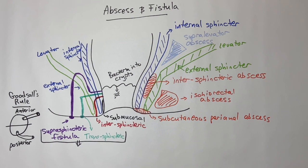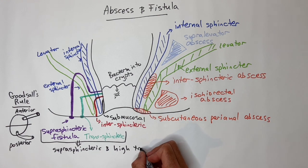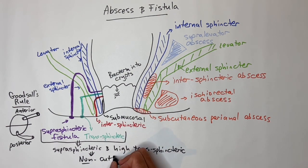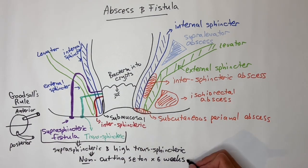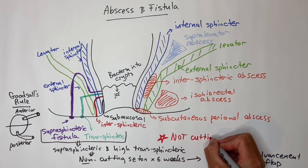Submucosal and intersphincteric and low transsphincteric fistulas can be simply opened up to treat the fistula. Suprasphincteric and high transsphincteric, you do not want to cut too much muscle, which could cause incontinence. So then you use things like non-cutting setons, which are placed for six weeks, followed by a curettage of the tract or perhaps a mucosal advancement flap with ligation of the tract. A cutting seton is no longer used due to high risk of incontinence and how painful they are.